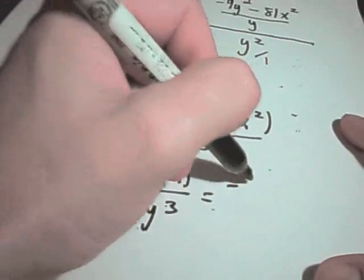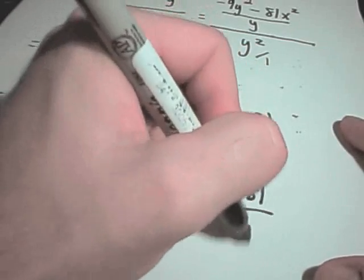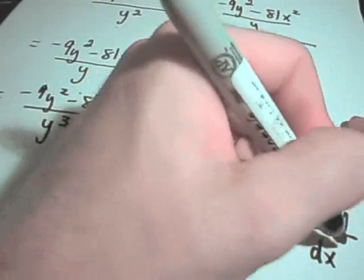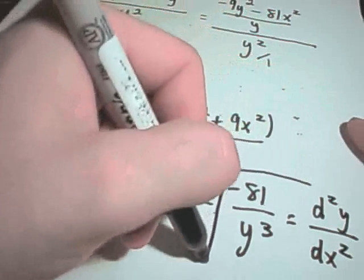And you can simplify this down, and you'll have negative 81 over y cubed. And again, that is your, finally, your second derivative with respect to y. Or excuse me, with respect to x.